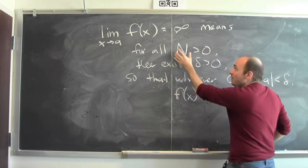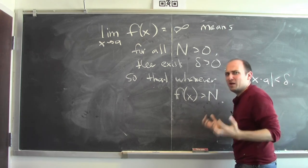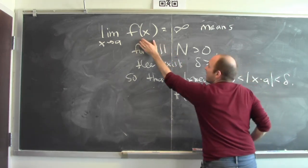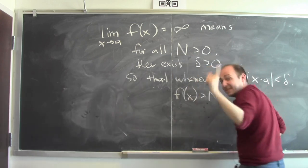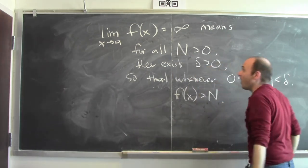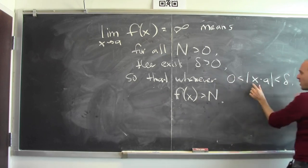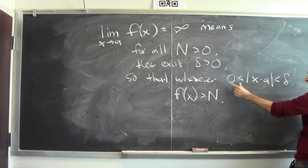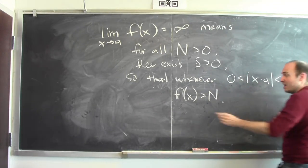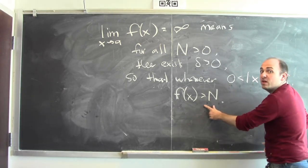Instead of an epsilon, I've got an N that represents how large you want f(x) to be. So you demand that f(x) be bigger than some N, and I can get you there. I can satisfy that requirement by choosing some small delta so that when x is within delta of A and x isn't equal to A, then f(x) really is bigger than the N that you demanded.